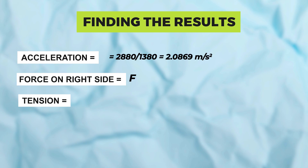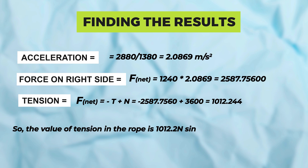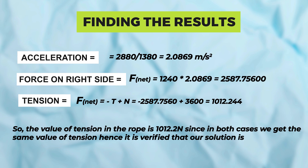Acceleration equals 2880 over 1380, which equals 2.0869 m/s². Force on the right side: F_net equals 1240 times 2.0869, so total force on the right side is 2587.756 N. Tension T equals N minus F_net, where N is 3600 and F_net is 2587.756, giving total tension of 1012.244 N. The value of tension in the rope is 1012.2 N. Since in both cases we get the same value of tension, it is verified that our solution is correct.